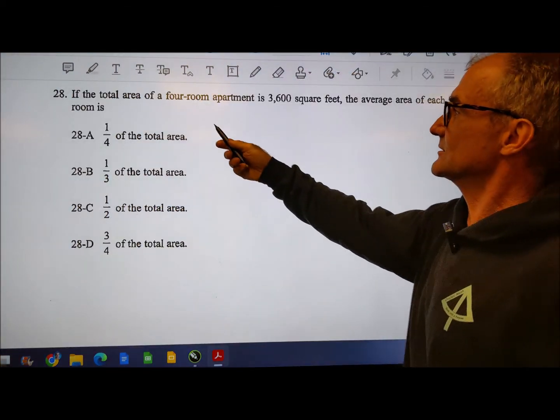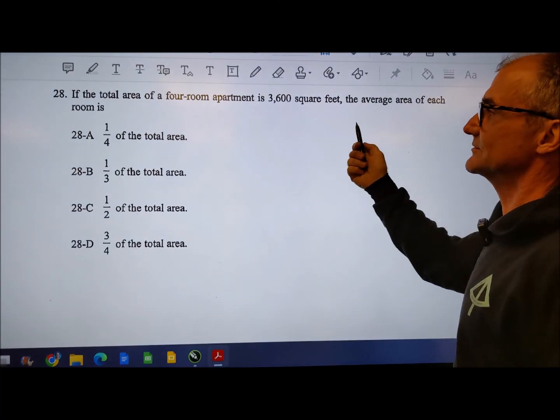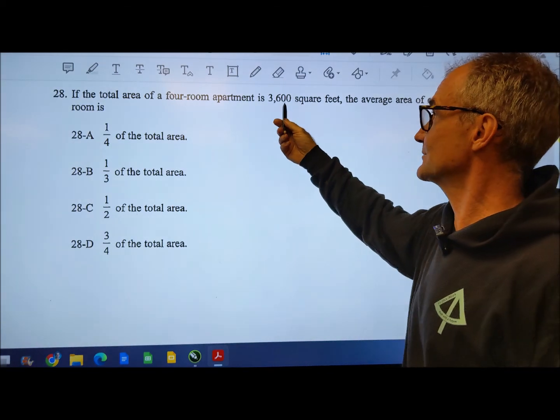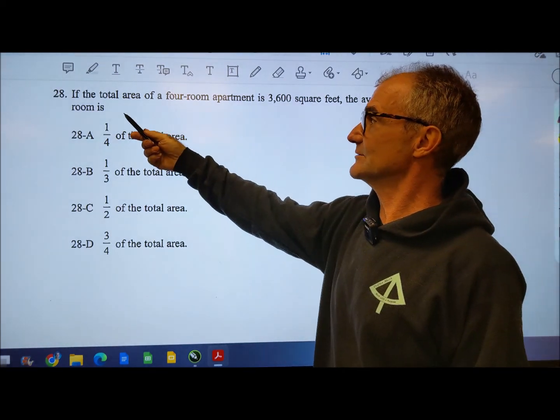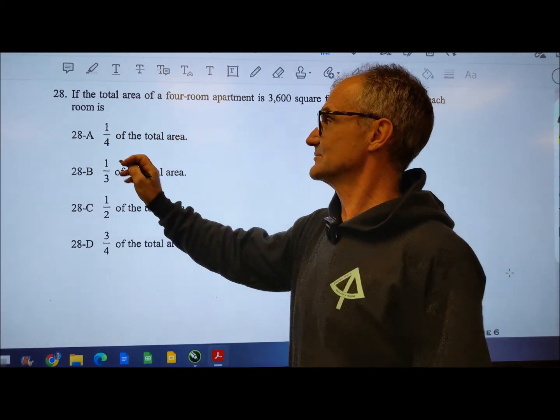The total area of a four room apartment is 3,600 square feet. The average area of each room, again that 3,600 is only a distractor. We don't even need it. The average area of each room is a quarter of the total area. That's it right there. Answer 28A.